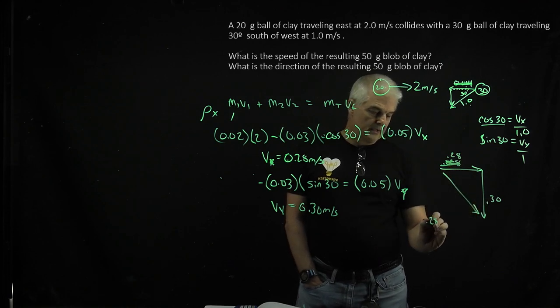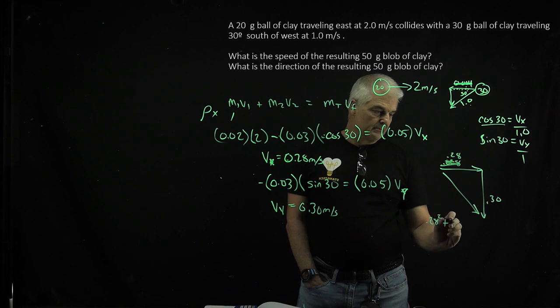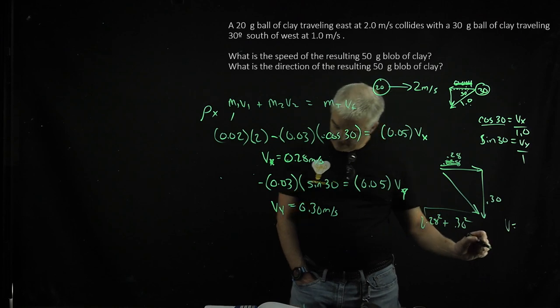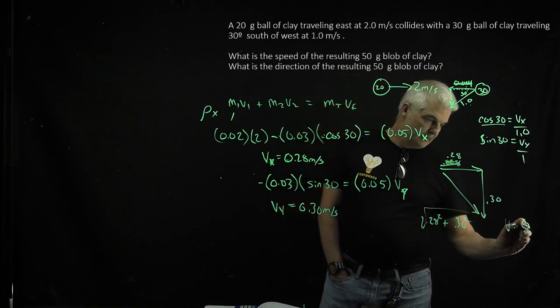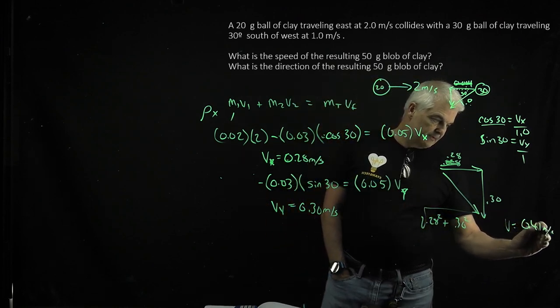If you take 0.28² + 0.30², then take the square root using Pythagorean theorem, you get the velocity: 0.41 meters per second. That's the speed.